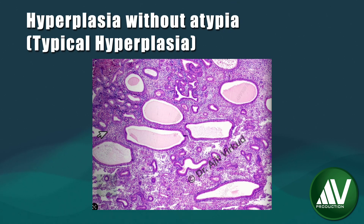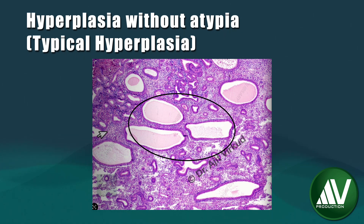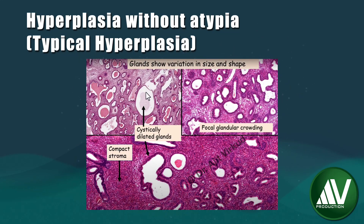This is an actual pathology slide showing hyperplasia without atypia. It shows the following diagnostic features: the glands show variation in size and shape, few glands may be cystically dilated, and when cystically dilated glands are more prominent, those lesions are labeled cystoglandular hyperplasia. Focal glandular crowding may be noted. Intervening stroma is very much reduced and usually predominantly compact. This is another slide where all these features are labeled.